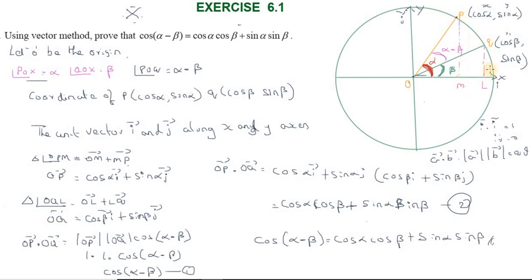The line from P perpendicular to the x-axis meets it at M, and the line from Q perpendicular to the x-axis meets it at L. For triangle OPM, the OP vector equals OM vector plus MP vector. OM is along the x-axis, so OM = cos α times the unit vector i. MP is along the y-axis, so MP = sin α times the unit vector j. Therefore OP = cos α i vector.